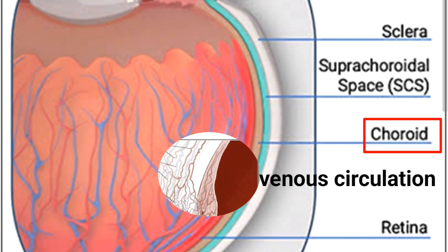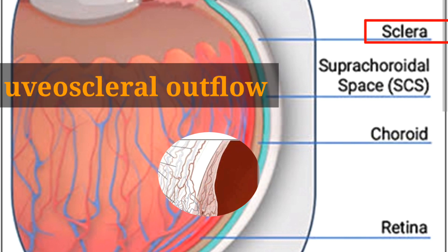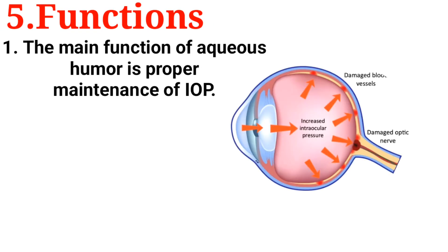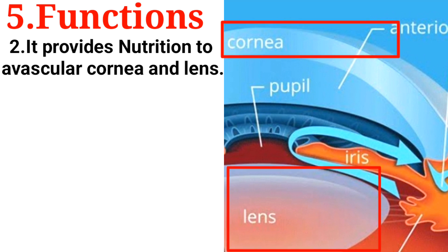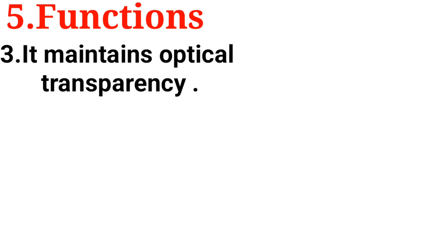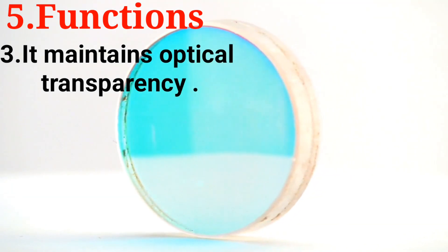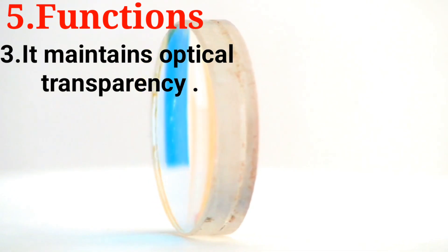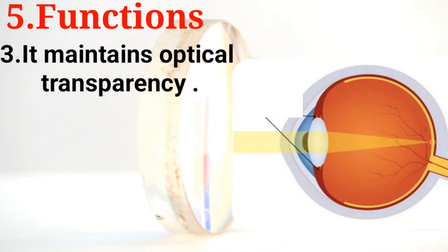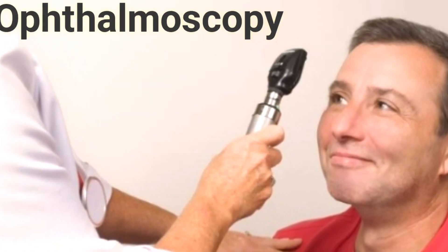That's why it's called uveoscleral outflow, as it passes through the uveal tissue and sclera. Functions. The main function of aqueous humor is proper maintenance of intraocular pressure. The second function is that aqueous humor provides nutrition to the avascular cornea and lens, since they have no blood vessels. It also removes metabolites from them. The third function is that it maintains optical transparency — aqueous humor is a transparent medium that allows light to pass through it to the retina, as seen when using an ophthalmoscope.